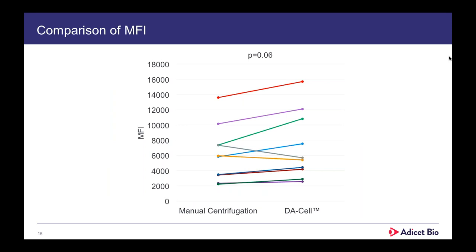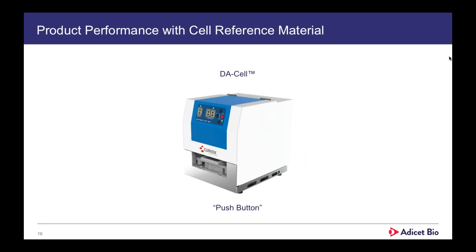We decided to dive deeper. We gated individual populations of cells and, because the panel uniquely identifies populations through one marker, we looked at the mean fluorescence intensity of each individual marker in that population. We plotted the MFI between manual centrifugation and the DA cell. Strikingly, the DA cell and the manual centrifugation method give roughly equivalent MFIs with a slight advantage to the DA cell — we're right at the border of statistical significance. My assumption is that with more samples we would probably hit statistical significance. The key for me is that there was no deterioration in signal with implementation of the DA cell.